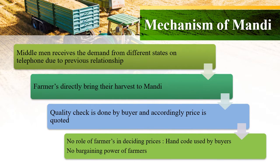This slide explains the current running mechanism of Mandis. It is clearly visible that middlemen control the overall execution of the process. Moreover, farmers possess very little bargaining power due to lack of information. Hence, ensuring transparency in the process with the flow of complete information will play a key role in addressing the situation.